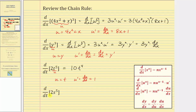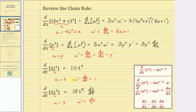Next we have the derivative of two s to the fifth with respect to t. Notice here we have an s term and the input variable is t, and therefore we need to apply the chain rule, where we're assuming s is a function of t. So this derivative is equal to the derivative of two s to the fifth with respect to s, times ds dt. The derivative of two s to the fifth would be 10 s to the fourth, and then we have times ds dt. We must apply the chain rule because we're assuming s is a function of t, so if we let u equal s, u prime would equal ds dt.